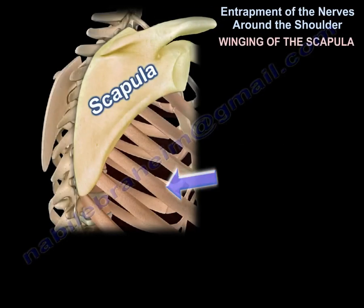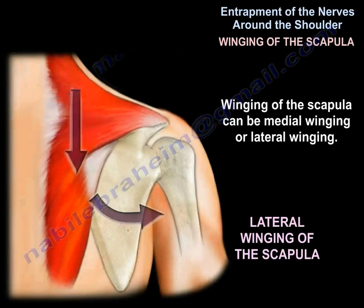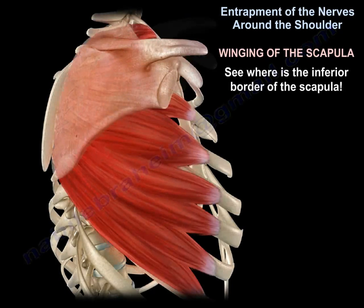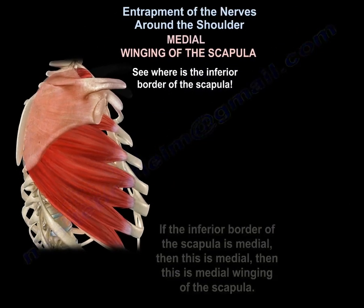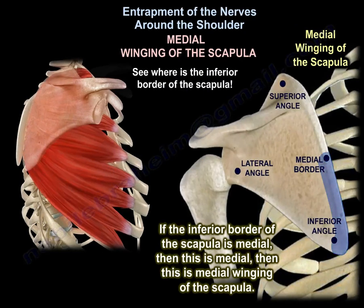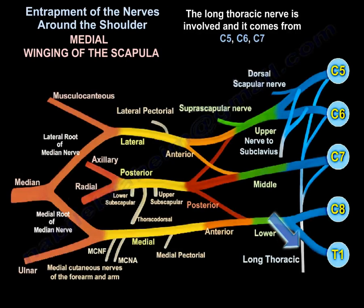Another entity is winging of the scapula — it can be medial or lateral winging. Look at where the inferior border of the scapula is. If the inferior border is medial, this is medial winging of the scapula. In medial winging, the serratus anterior muscle is involved, supplied by the long thoracic nerve, which comes from C5, C6, and C7.